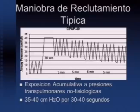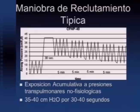This is a typical recruitment maneuver. What does this maneuver refer to? An attempt to open the lung. We apply a certain pressure of 35 or 40 cmH₂O during a certain period — 30 or 40 seconds — to open the lung and recruit collapsed alveoli.